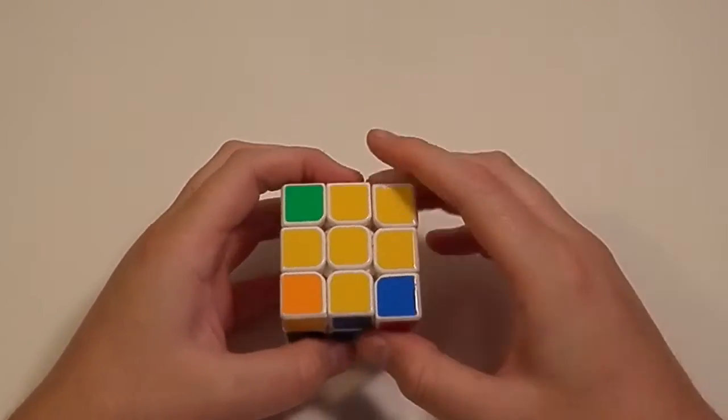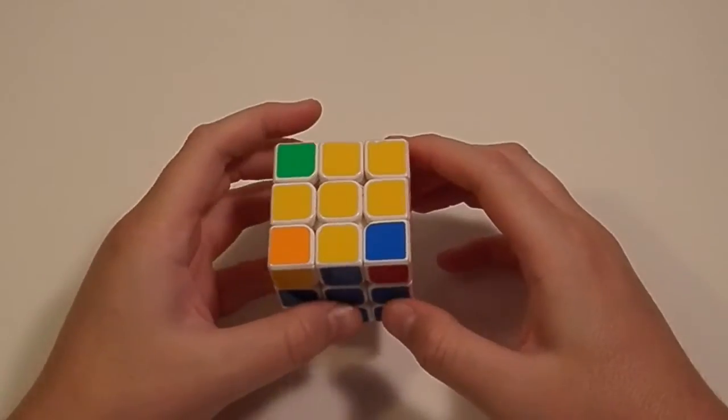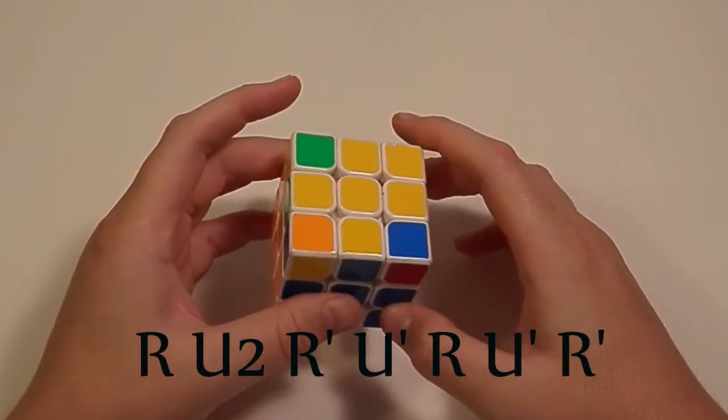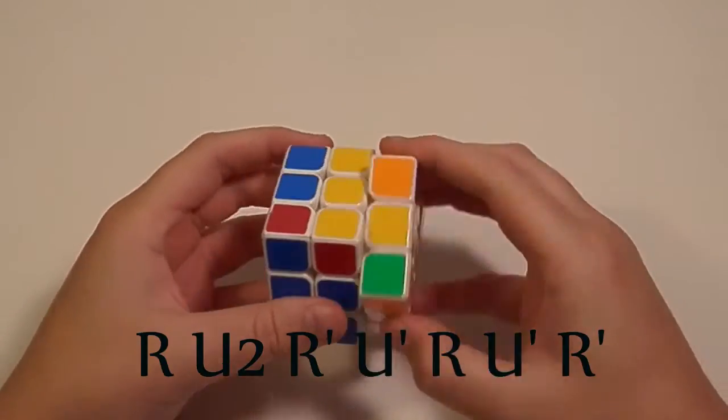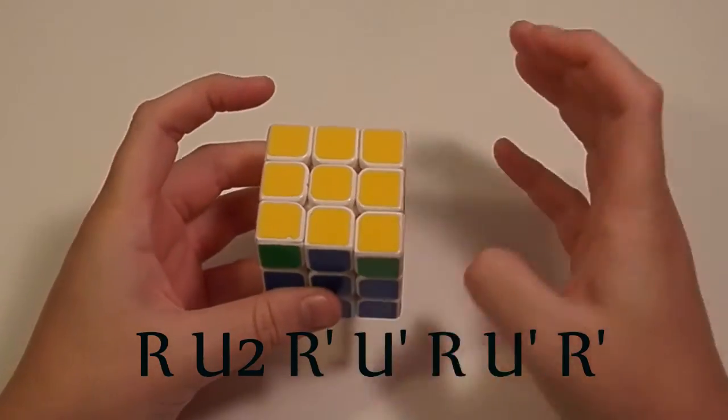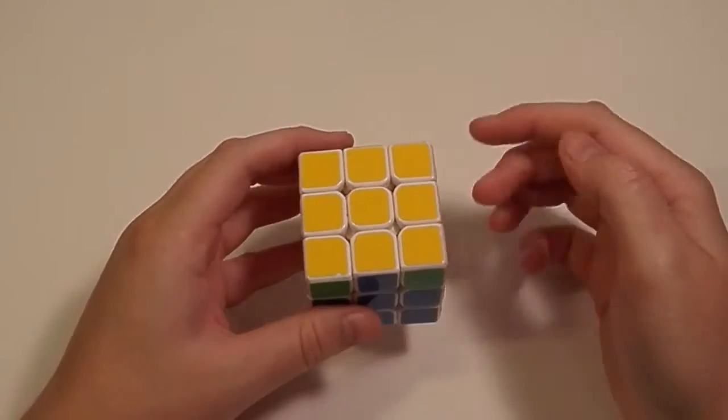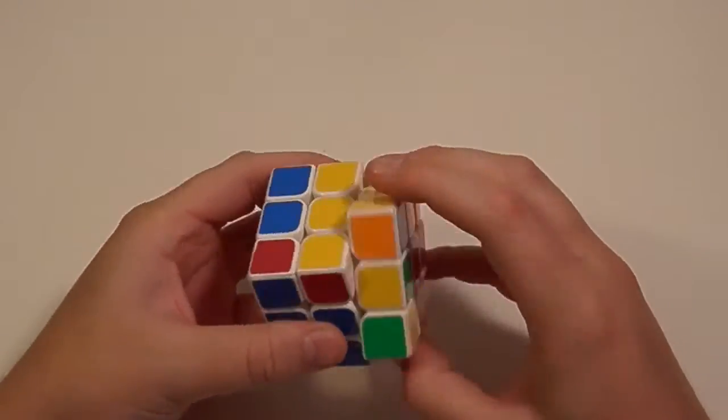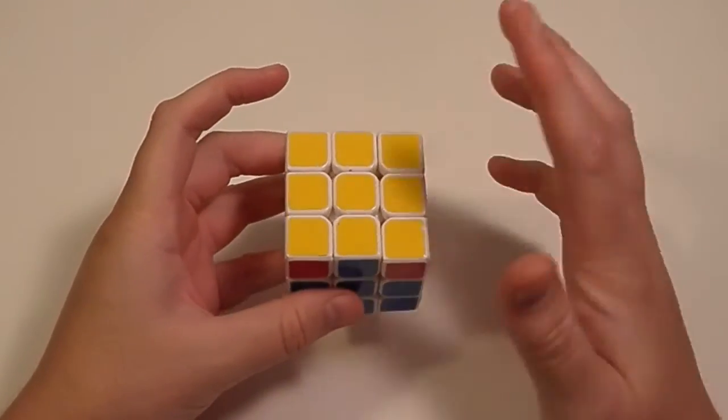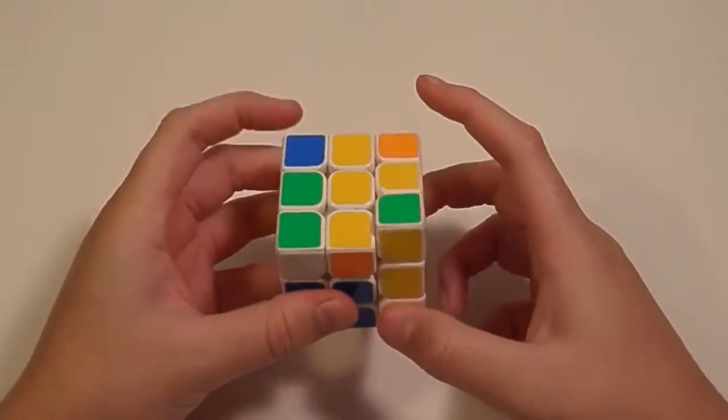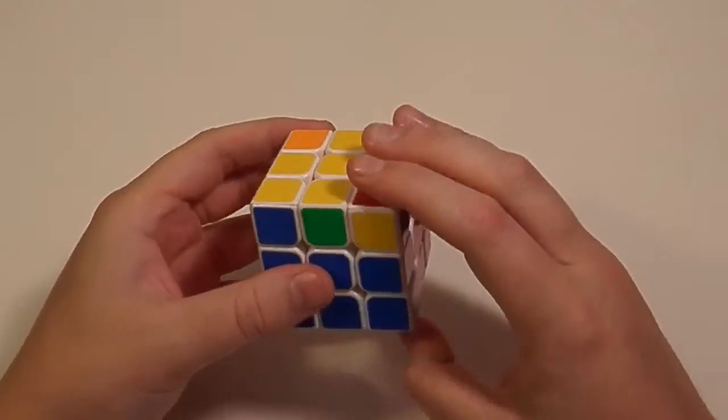Now the other one is my preferred method the R U2 R' U' R U' R' and that's really fast. So if you want to practice Anti-Sune just do Sune and it gives you the case that you can practice. Same way with Sune. If you want to practice it do Anti-Sune and it gives you the case.